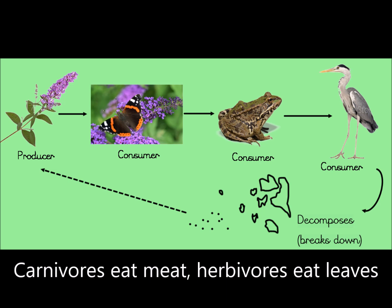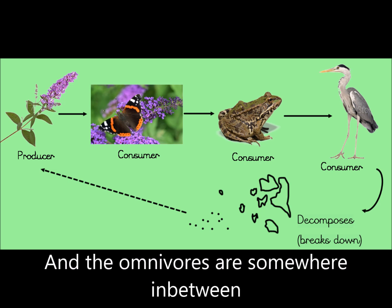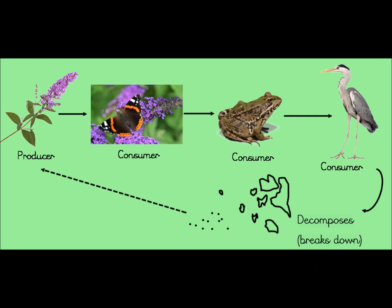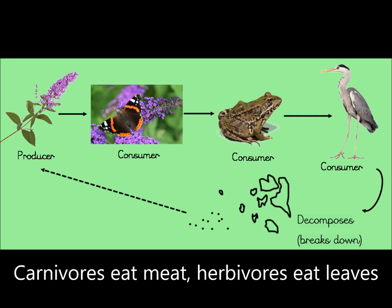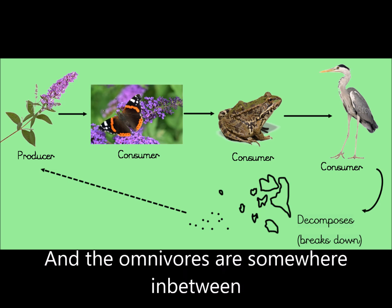Carnivores eat meat, herbivores eat leaves, and the omnivores are somewhere in between.